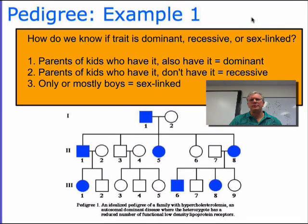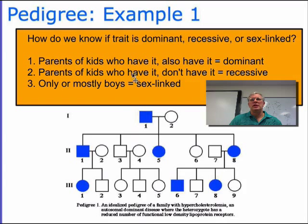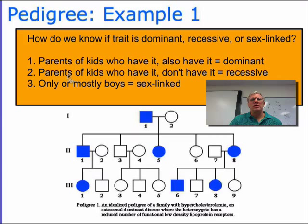So let's look at an example. Here's a pedigree. How do we determine whether the trait is dominant, recessive, or sex-linked? Well, let's look at these three keys. First, if the parents of the kids have the disorder as well, then the gene is probably dominant. If the parents don't have it, it's most likely a recessive disorder. And if it looks like mostly boys have it, there's a good chance it's sex-linked.